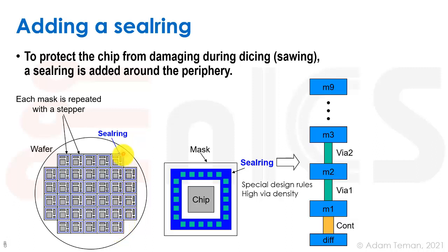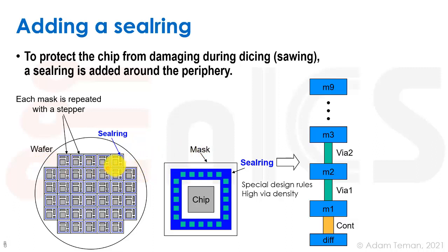Between chips on a wafer there is a significant area called scribe lines — the region where dicing occurs. Fabs place metrology structures in the scribe lines, such as ring oscillators to characterize the process corner at various points on the wafer. Academics may even get to place test structures in scribe lines. Although these structures are destroyed during dicing, probing the whole wafer beforehand allows the fab to determine exactly what corner each wafer was fabricated at.